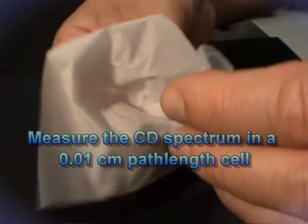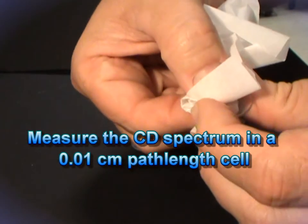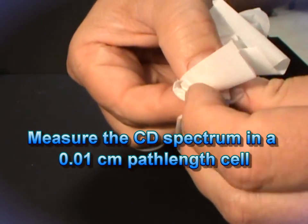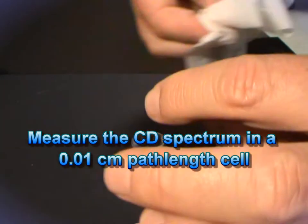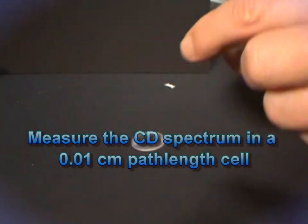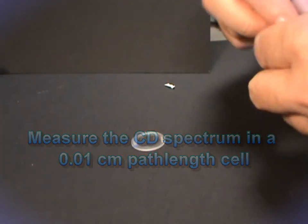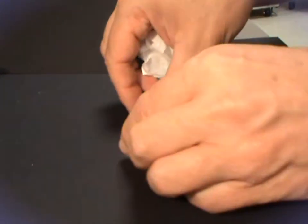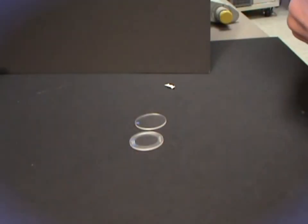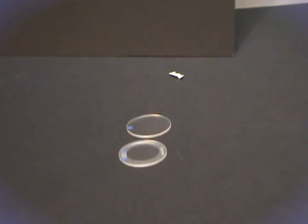Use a cell with a path length of 0.01 centimetres. I'm using a cylindrical demountable cell but everything I say applies to rectangular cells. The manufacturer should supply the sample volume required but it may be best to find the minimum you can use without introducing bubbles.